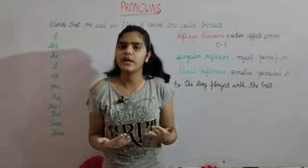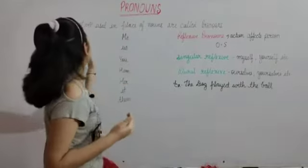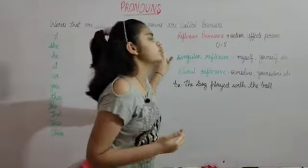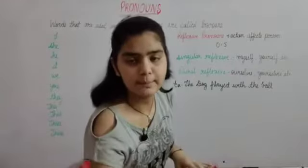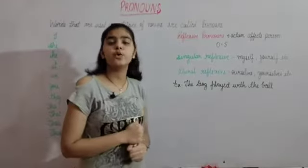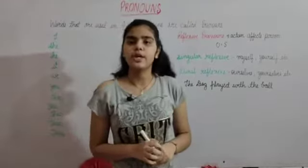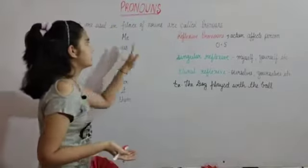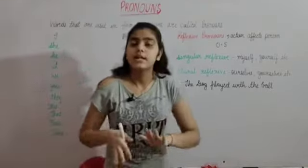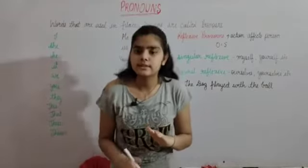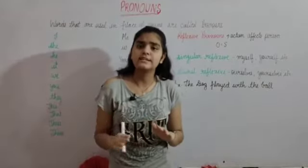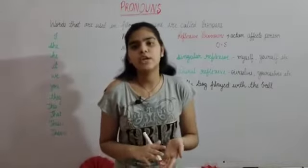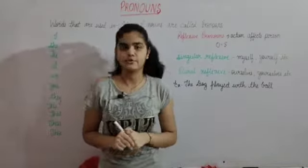So pronouns kya hotte hain? Pronouns hote hain the words that are used in place of nouns. Aise words jo noun ki place pe use kiye jate hain unko hum kehte hain pronouns — those words which are used in the place of nouns. Ab nouns kya hotte hain? The name of any person, place, animal, or thing. So unki jagah pe jo words use kiye jate hain unko hum kehte hain pronouns.